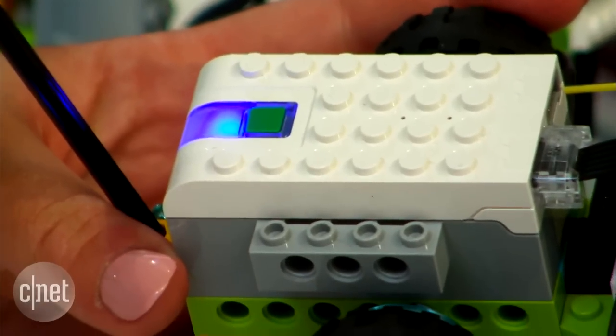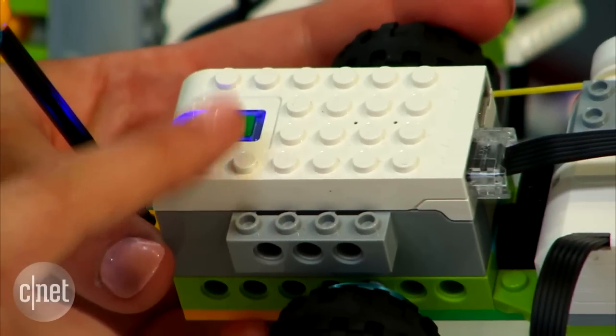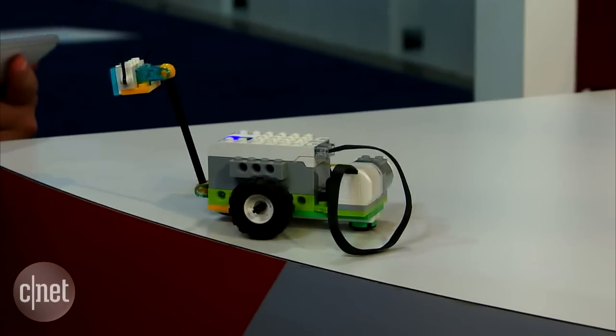In the kit you get three components: the smart hub which consists of the Bluetooth, battery and a processor. You also get a motor and two sensors.